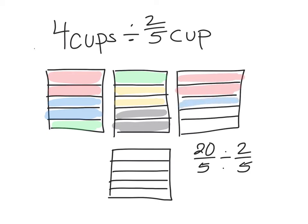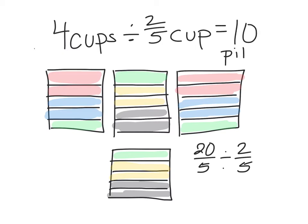Now I only have 4 colors to choose from, but I can go through and count how many pitchers I made. Each time I grouped 2 of those pieces together, I was making a pitcher. So counting: 1, 2, 3, 4, 5, 6, 7, 8, 9, 10. So in the end, we end up with 10 pitchers of lemonade that we can make, and we did this visually with this model.